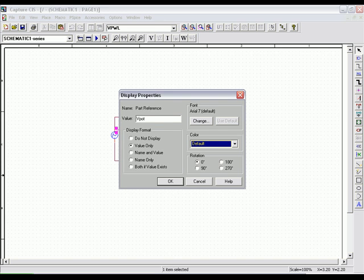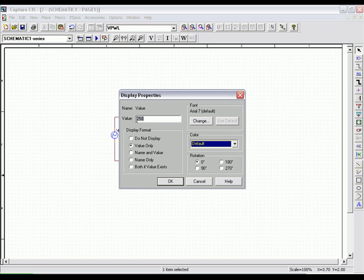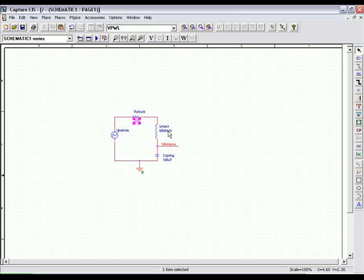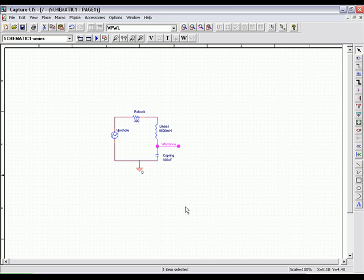And changing the name to Vpothole on the voltage source, changing our value of the resistor to 300 ohms, and the L and the C stay the same. Now the next step is to modify the simulation profile. We want to run this to two seconds with a step size of two milliseconds. Click apply and OK. And now we're ready to run that circuit.